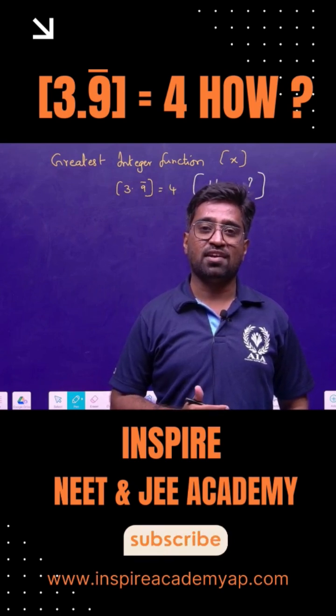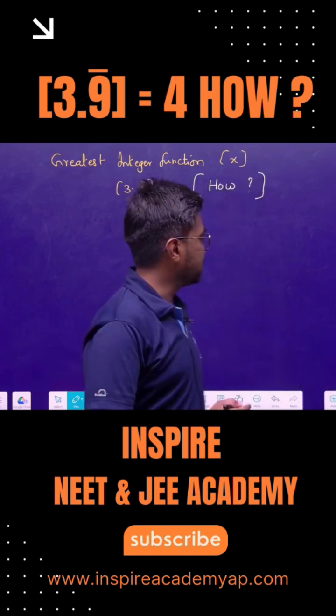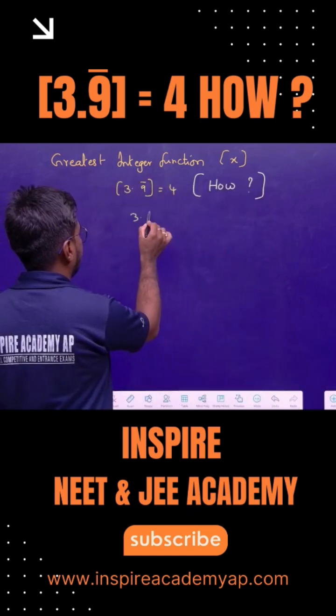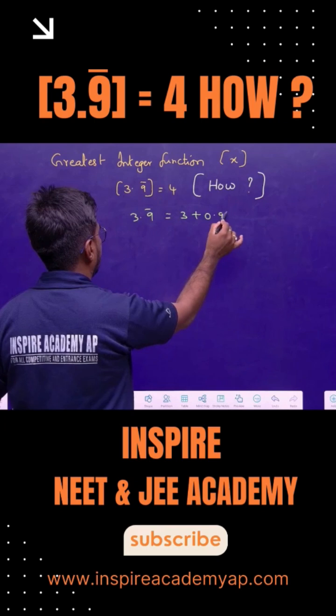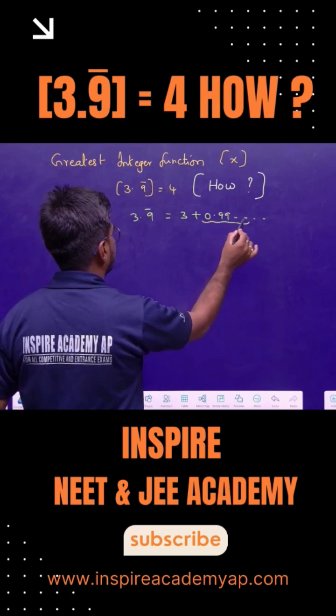Yes, you heard it right. I am going to prove this controversial statement. See here, 3.9 bar can be written as 3 plus 0.9999 and so on. I will assume this one as x.